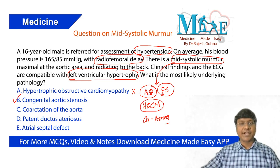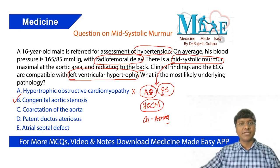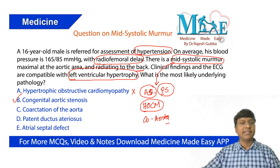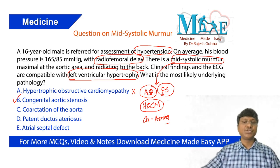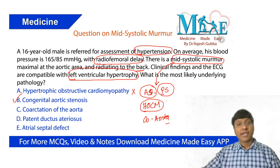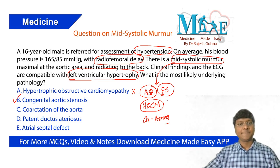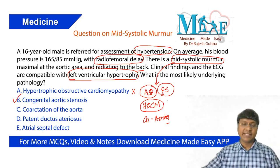In hypertrophic obstructive cardiomyopathy, you will have an ejection systolic murmur, but it is not in the aortic area. You will have this ejection systolic murmur in HOCM in the left parasternal area, and there is no radiation of this HOCM murmur to either the carotids or to the back.